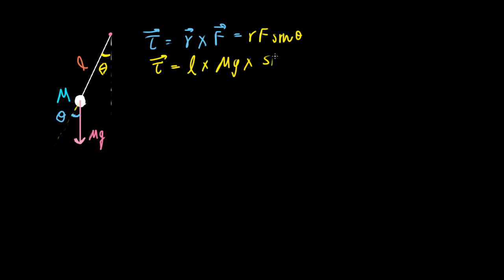We also know that torque equals I alpha, where I is the moment of inertia and alpha is the angular acceleration. So this implies that mg L times the sine of theta must be equal to I. Now, I of this bob right here is ml squared.